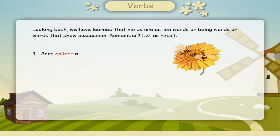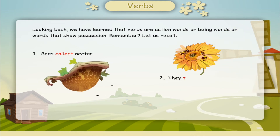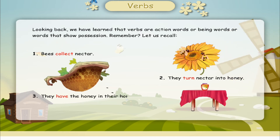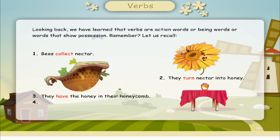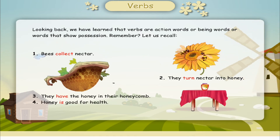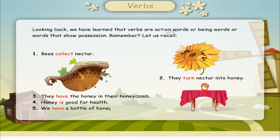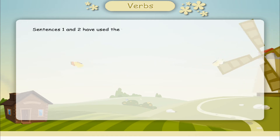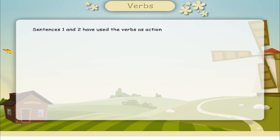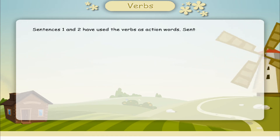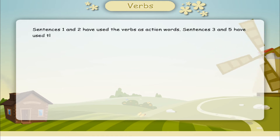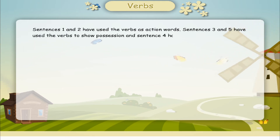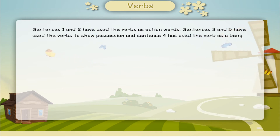Bees collect nectar. They turn nectar into honey. They have the honey in their honeycomb. Honey is good for health. We have a bottle of honey on the table. Sentences 1 and 2 have used the verbs as action words. Sentences 3 and 5 have used the verbs to show possession. And sentence 4 has used the verb as a being word.